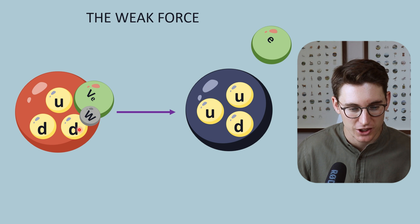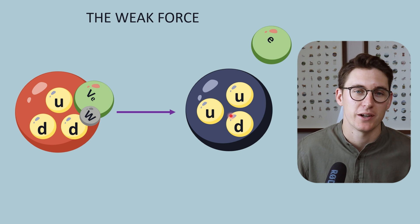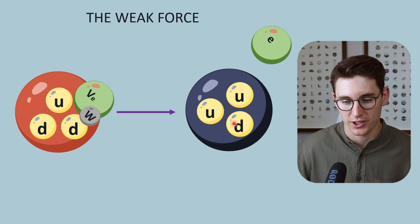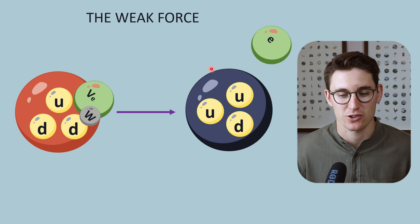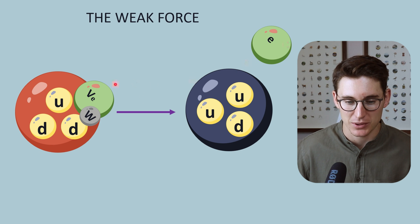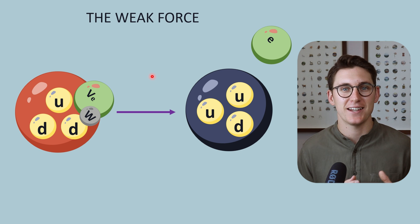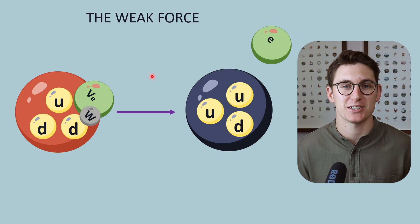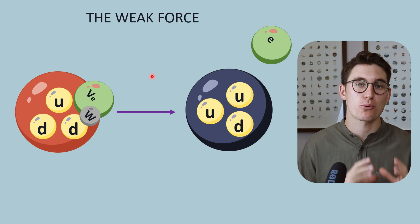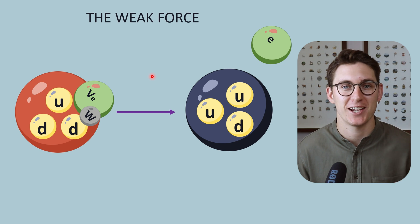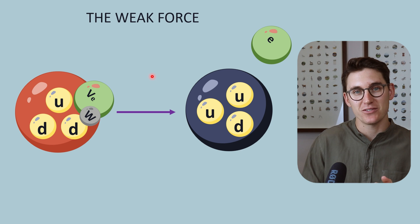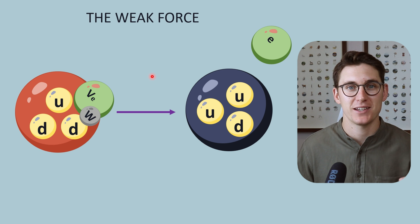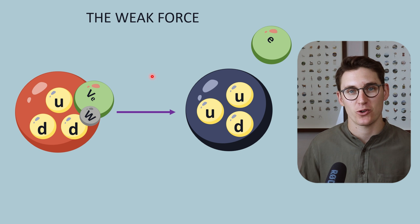The W boson changes the down quark into an up quark. That process not only changes a neutron into a proton, but also releases an electron — this is what's known as beta minus decay. If this occurs within an element, we've not only changed a neutron into a proton, but actually changed the element itself, because the number of protons determines which element it is. We've effectively lost a neutron and gained a proton: our mass number remains the same, but our atomic number has increased by one.